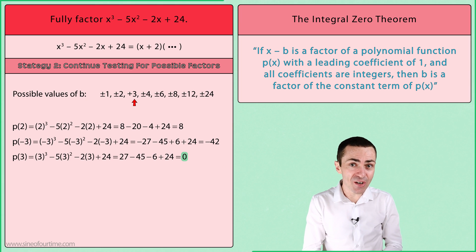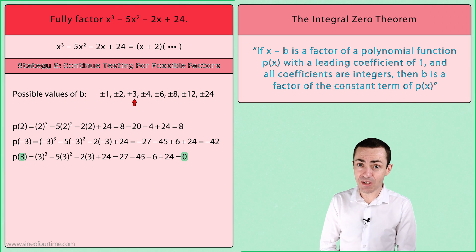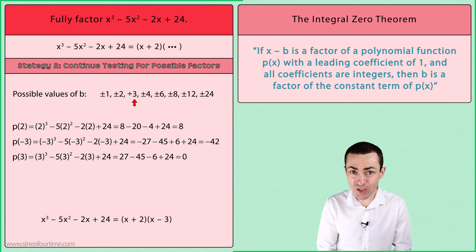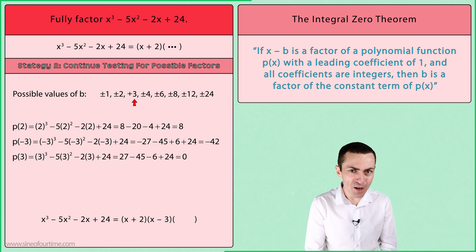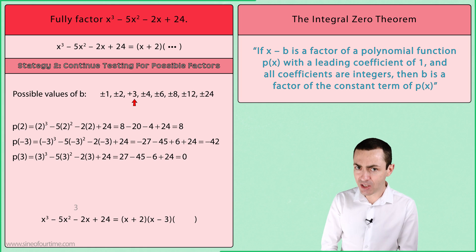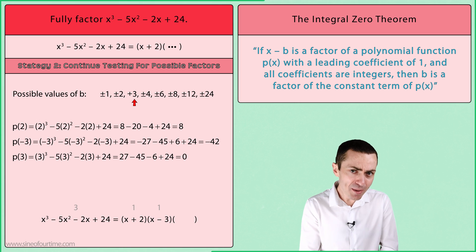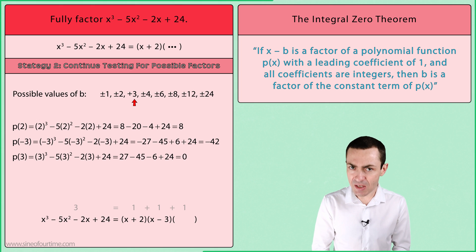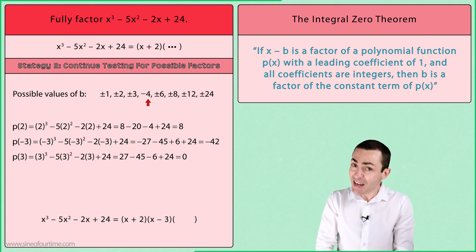This is equal to 0, which tells us that b has a value of 3, and hence that x - 3 is a factor of this polynomial. At this stage, we just need one more factor. We know this because the degree of the polynomial is 3, while the degree of each of the factors is 1, which tells us that we need one more factor in order for the sum of the degrees of the factors to be equal to 3.